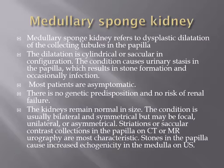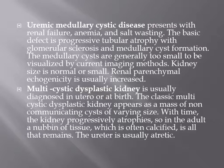Medullary sponge kidney refers to dysplastic dilatation of the collecting system; most patients are asymptomatic and it is usually bilateral and symmetrical. It causes striations or circular contrast collections in the papillae on CT and MRI. Patients are at risk of stone formation due to urinary stasis. Medullary cysts are small and difficult to detect by current imaging methods. Multicystic dysplastic kidney is usually diagnosed in utero or at birth; the kidney appears as a mass of non-communicating cysts that progressively atrophies, appearing as a nubbin of tissue in adults, with an atretic ureter.